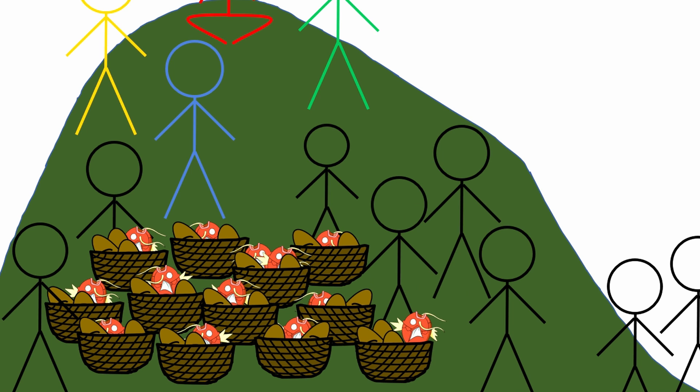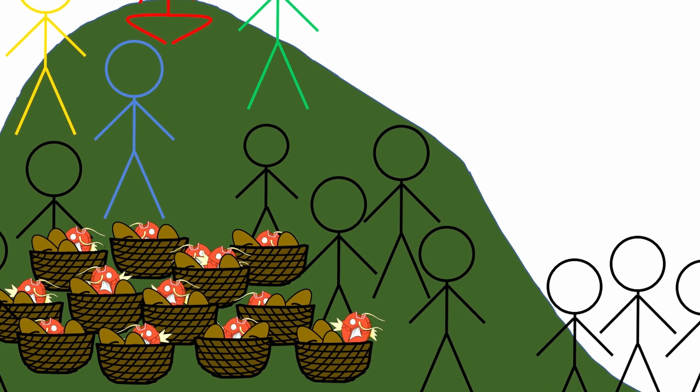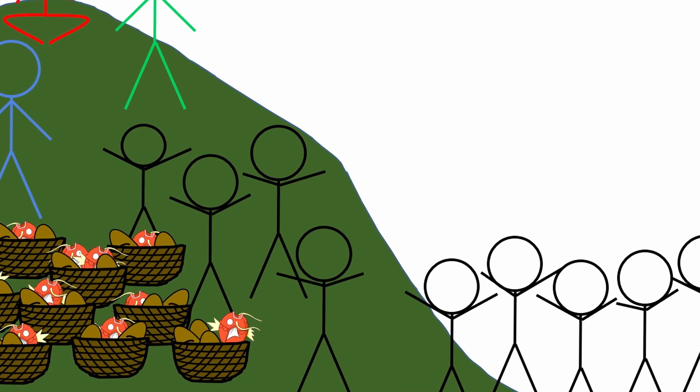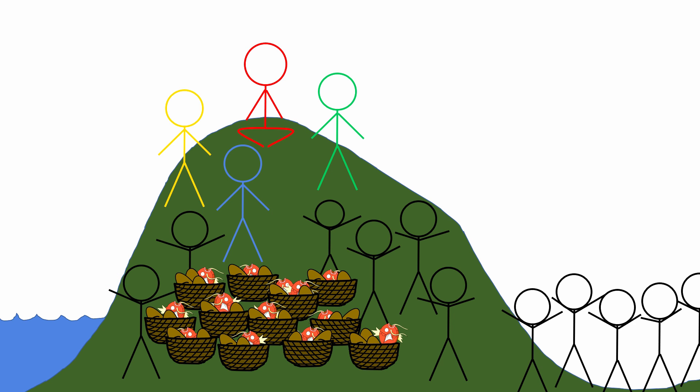When the people saw him do this miraculous sign, they exclaimed, surely he is the prophet we have been expecting. When Jesus saw that they were ready to force him to be their king, he slipped away into the hills by himself.